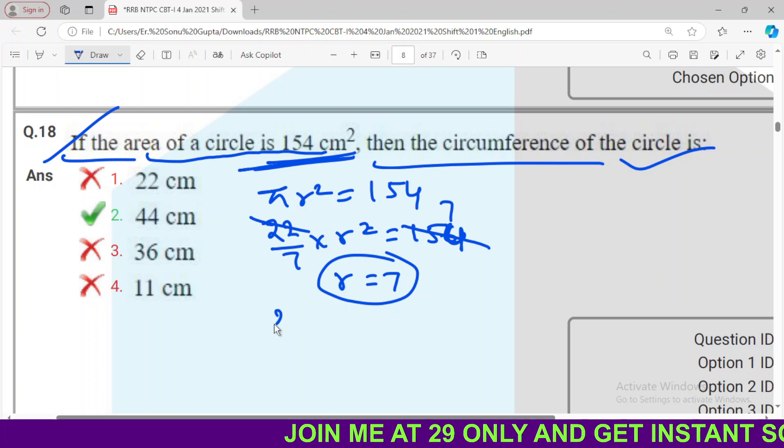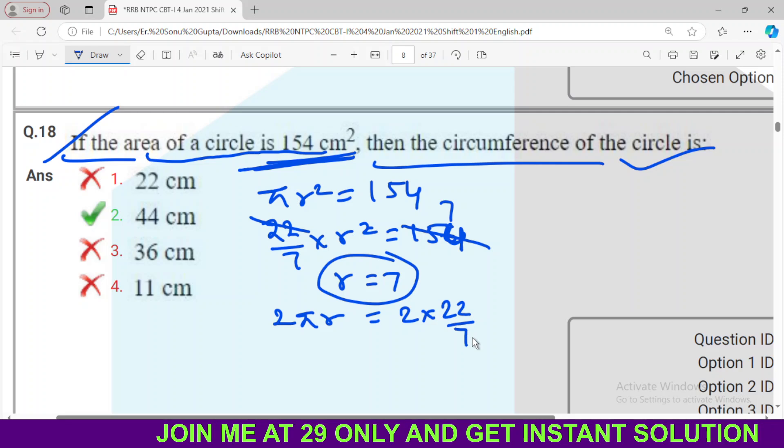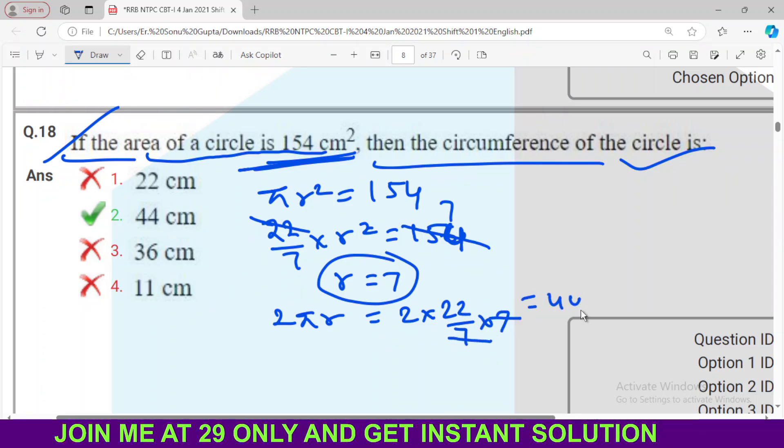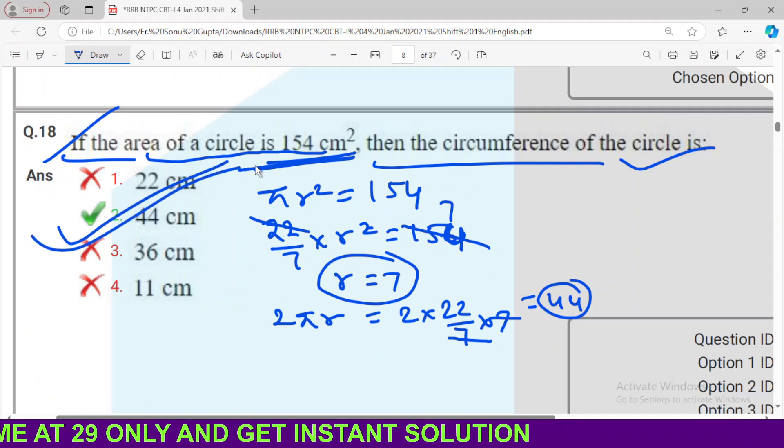And when R will get 7, then 2 pi R will get out. 22/7. 7, 22, 24. Who will not make it? Option number 2 correct. Thank you, thank you.